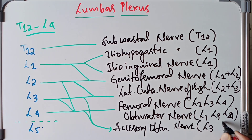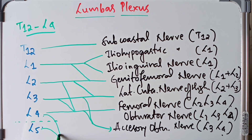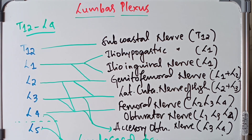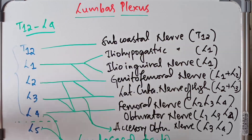L4 and L5 combine to form the lumbosacral trunk. So in summary, the lumbar plexus includes T12 to L4 spinal segments. The subcostal nerve derives from T12 only.